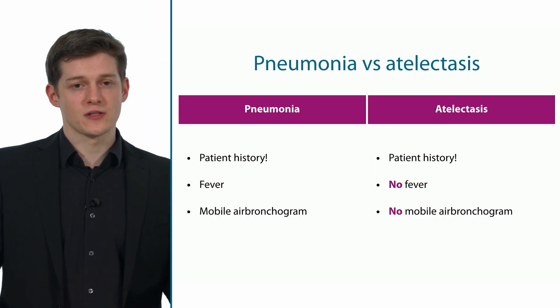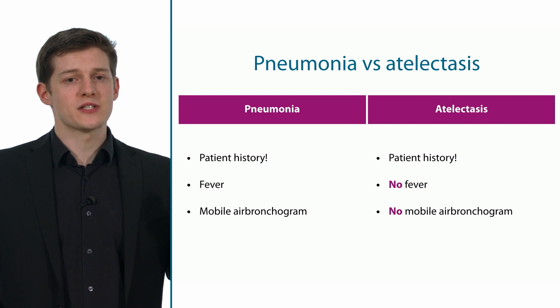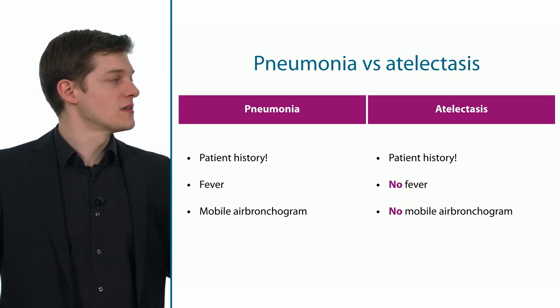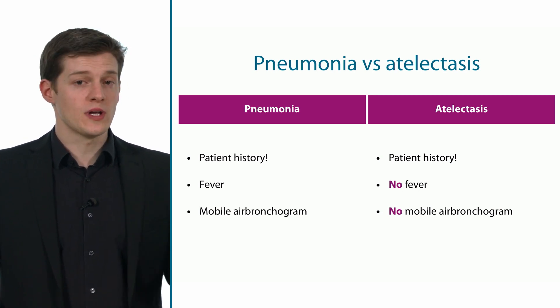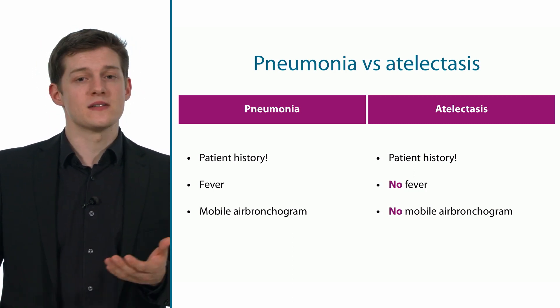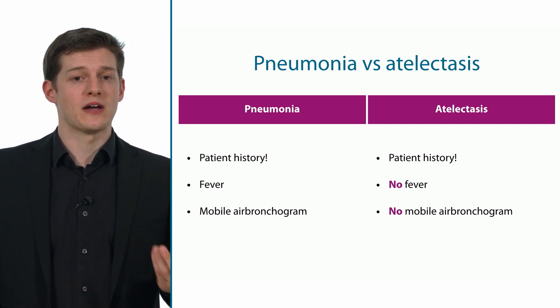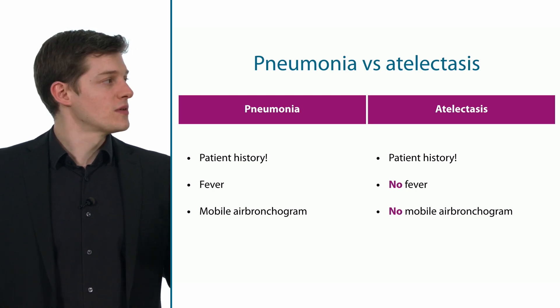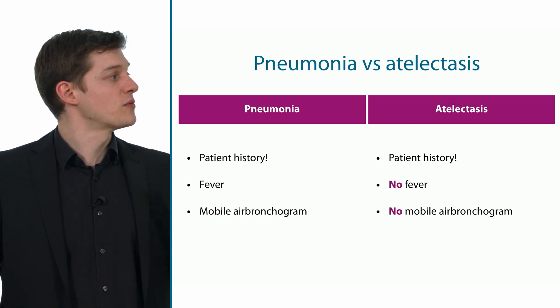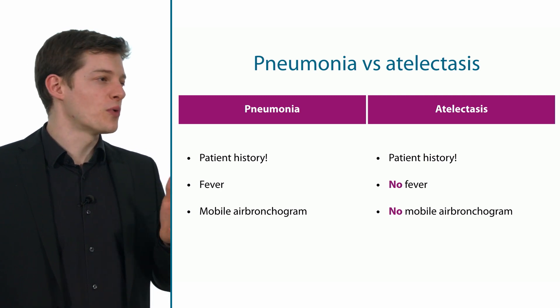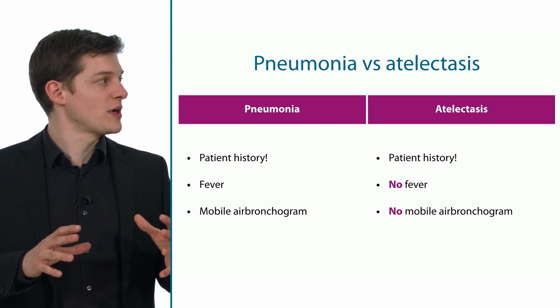How can we differentiate between pneumonia and atelectasis, where you also have dense tissue appearing as hepatisation? We can differentiate using the patient's history. In pneumonia we have high fever; in atelectasis we don't. Very important for differentiation is the mobile air bronchogram — in pneumonias you see it quite frequently, whereas in atelectasis you might see a static air bronchogram, but it is never mobile.